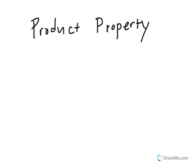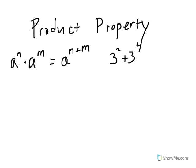We'll start with the product property, which in exponents says that a to the power of n times a to the power of m is equal to a to the power of n plus m. An example of this would be something like 3 squared times 3 to the 4th would equal 3 to the 2 plus 4, which is 6.